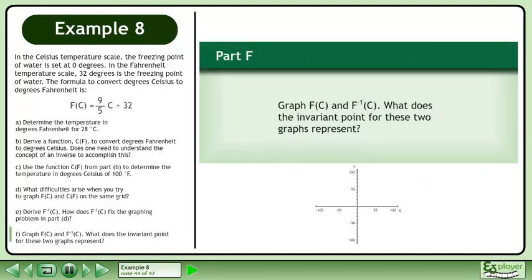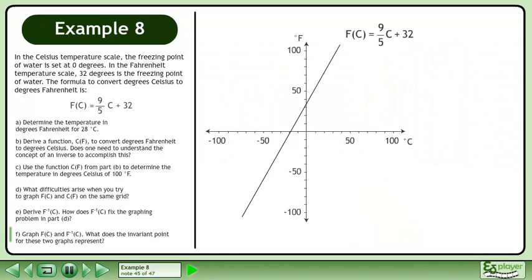In Part F, we'll graph f of c and f inverse of c. What does the invariant point for these two graphs represent? First, draw the graph of f of c equals 9 over 5c plus 32.